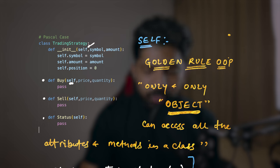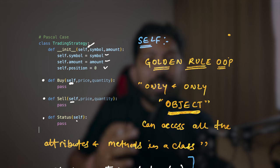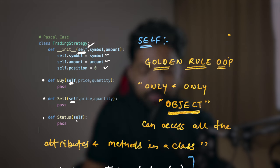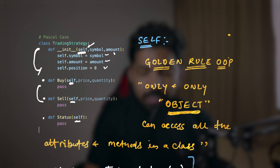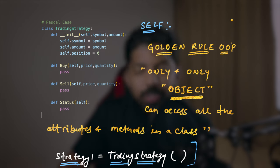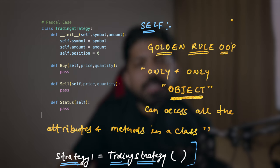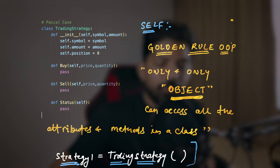In the constructor function we have self, and when we define variables we prefix them with self, and in all other methods we mention self as a parameter. So the question is: what is the need for self? If we remove self from all these functions, will they be able to communicate with each other and will the attributes be able to talk with other methods? Let's run this program and see the answer.